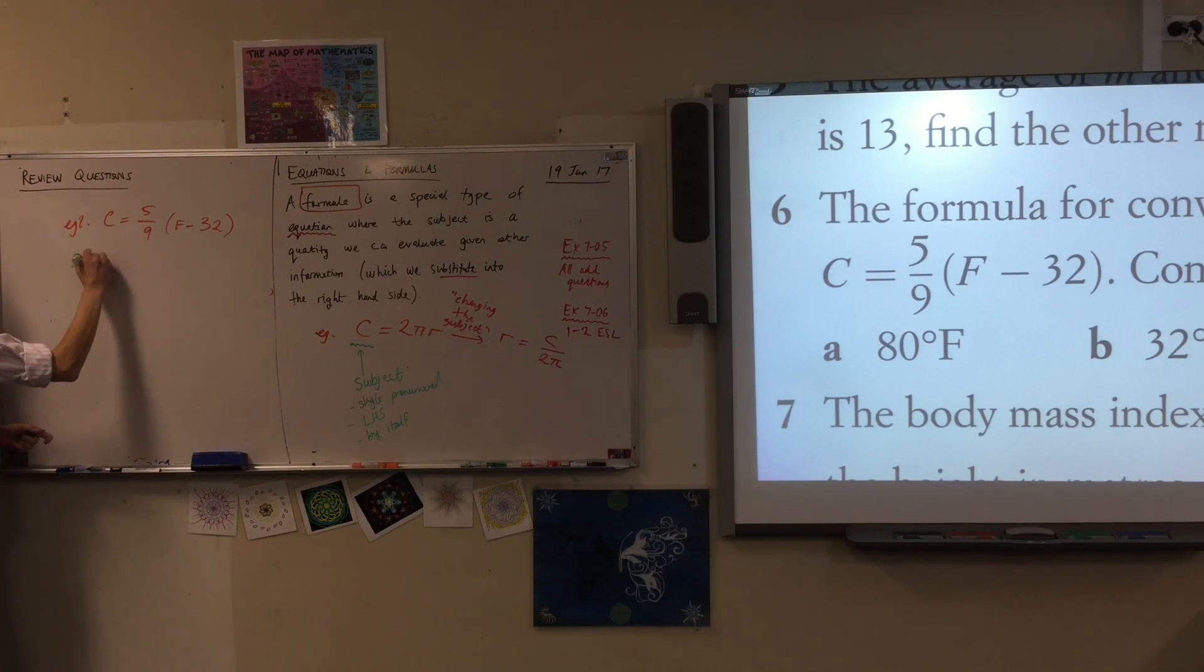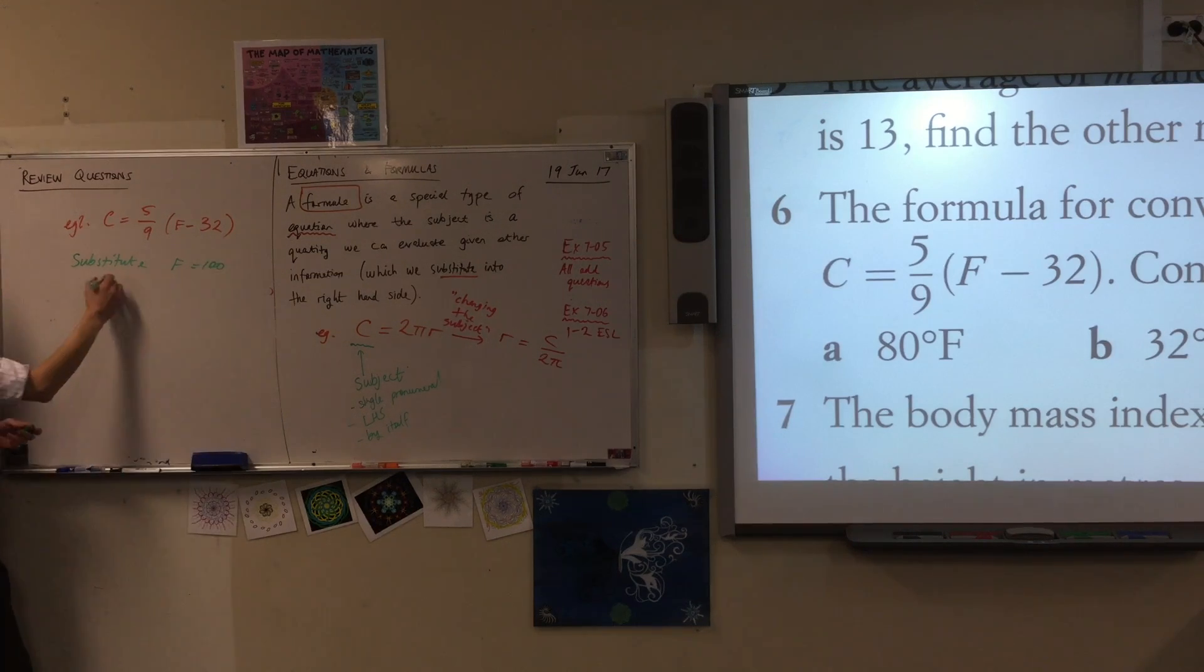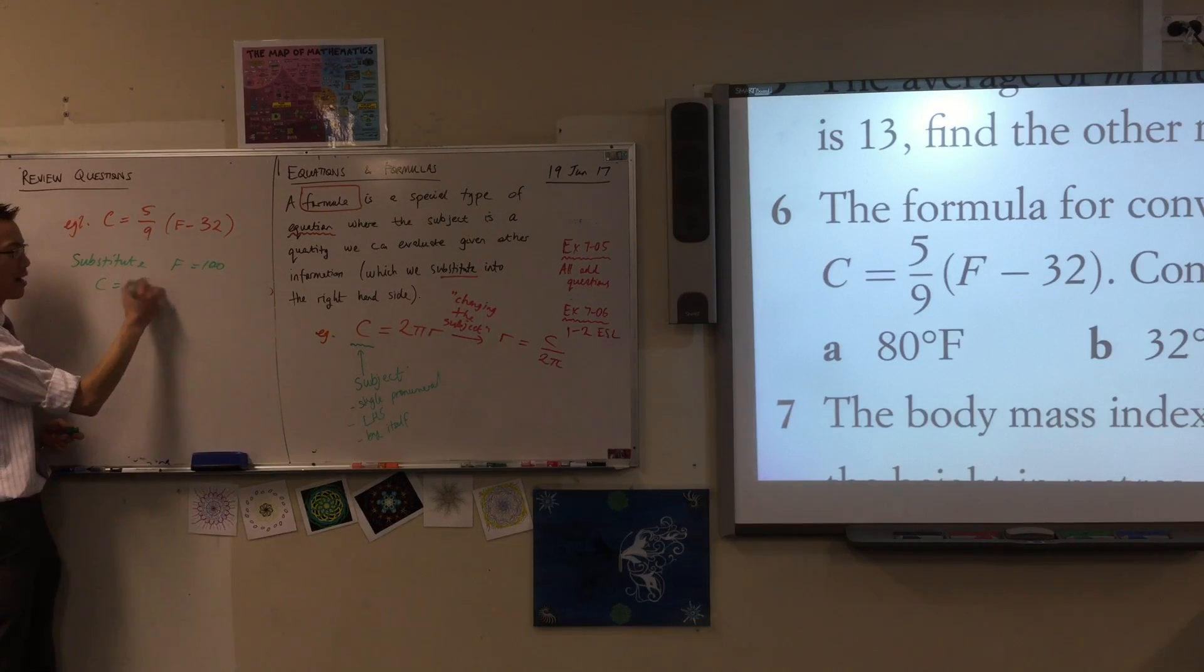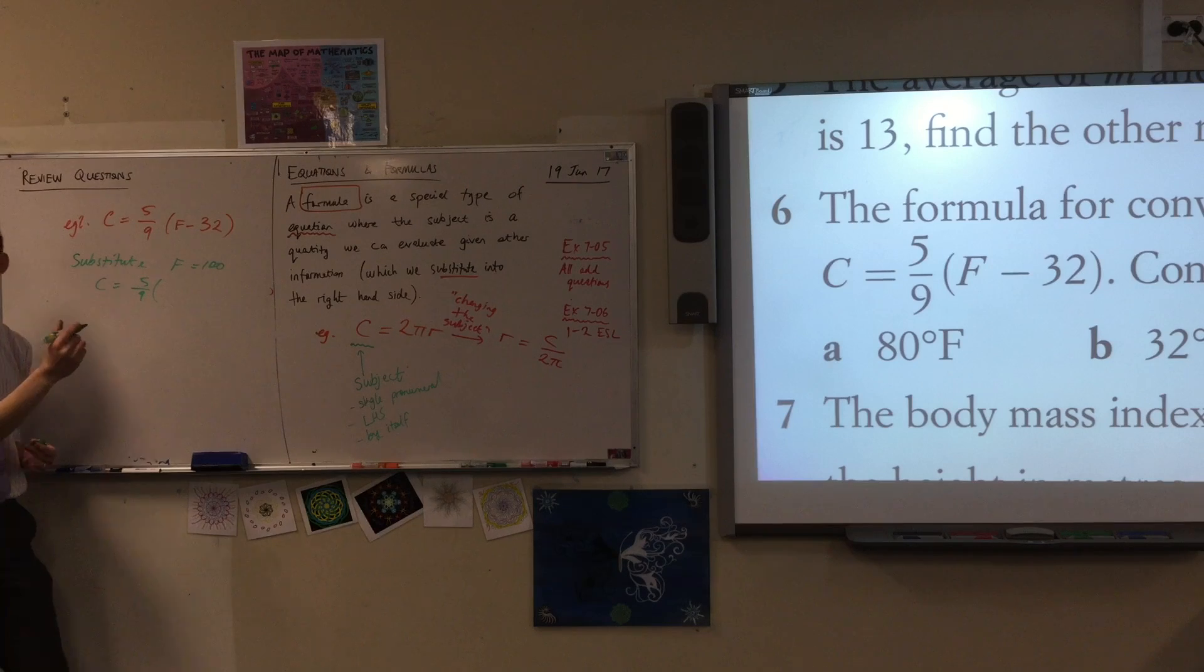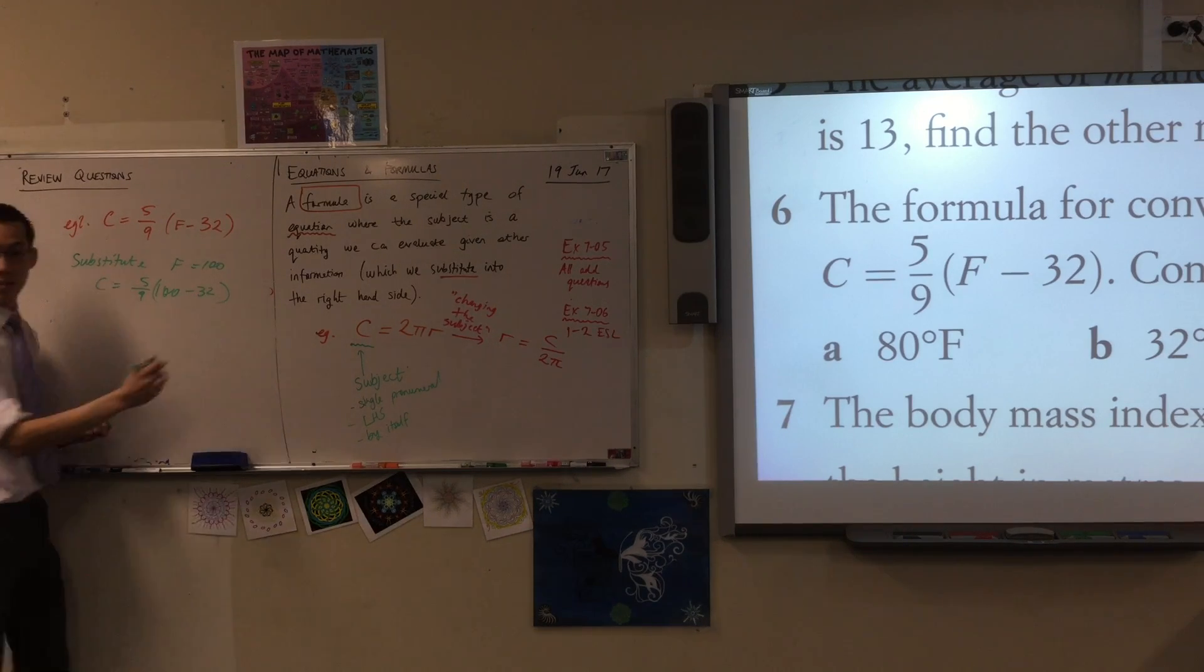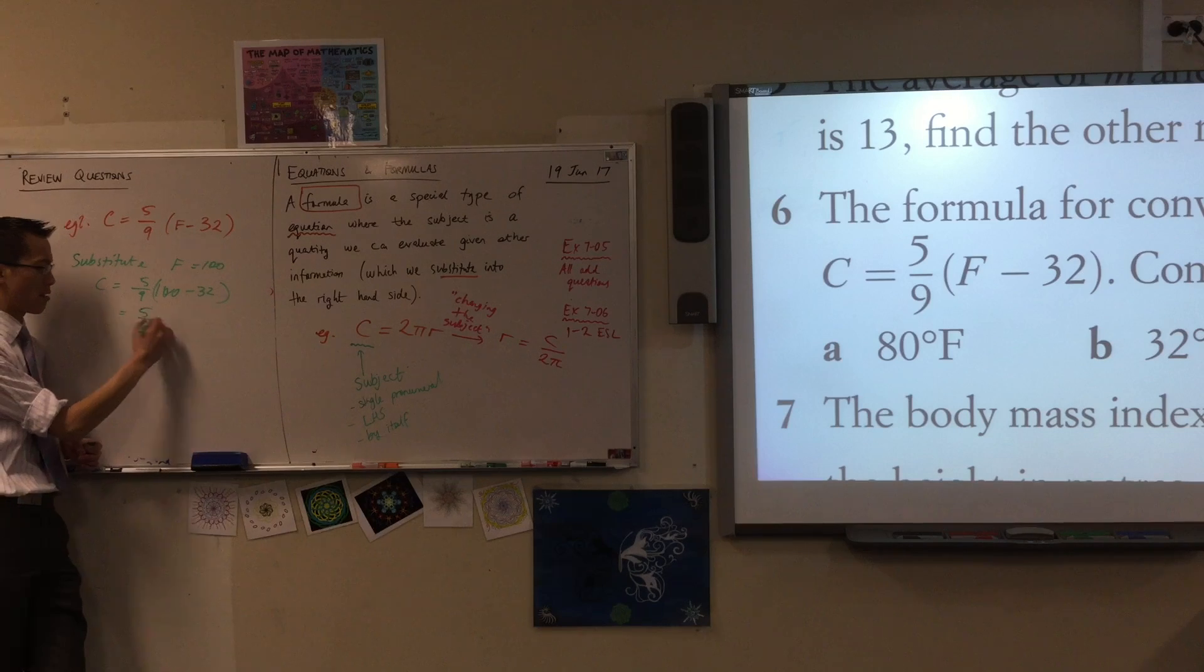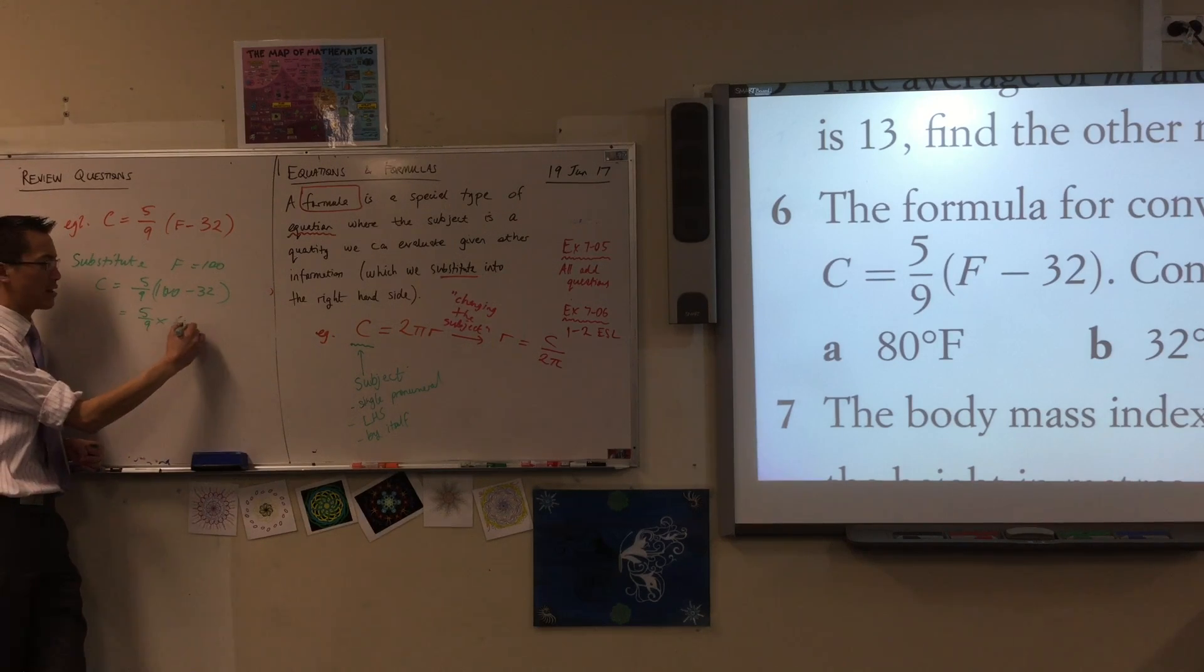So I'm going to substitute in F equals 100. Let's see what happens. C will be equal to five over nine, and I'm just going to write 100 minus 32. I've done my substitution. 100 take away 32 is 68, isn't it? 68.